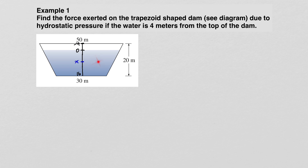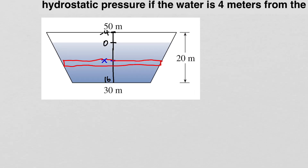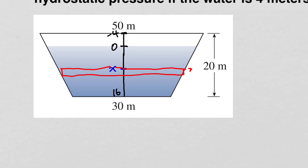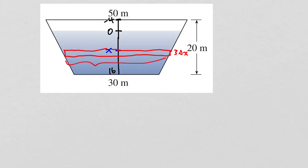We draw a horizontal rectangle at depth x. If we zoom in, the thickness of this rectangle is delta x. So what we need to find is the length of this rectangle, since the area equals length times width, and the width is delta x.